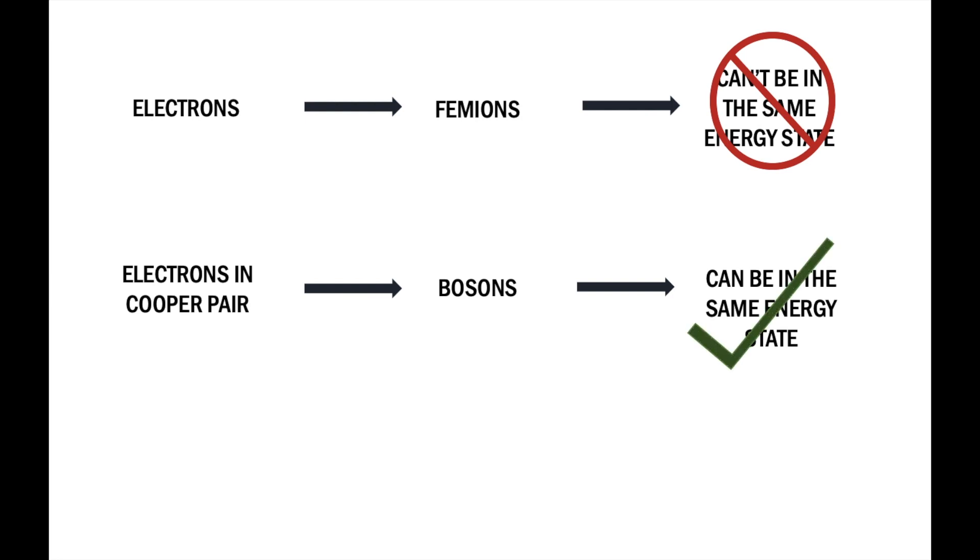The explanation for this goes into quantum mechanics. Briefly, electrons are fermions, which means they cannot be in the same state. However, when two electrons are in a Cooper pair, they can act together as bosons, particles which are allowed to be in the same state. Therefore, all the Cooper pairs go into their ground state.